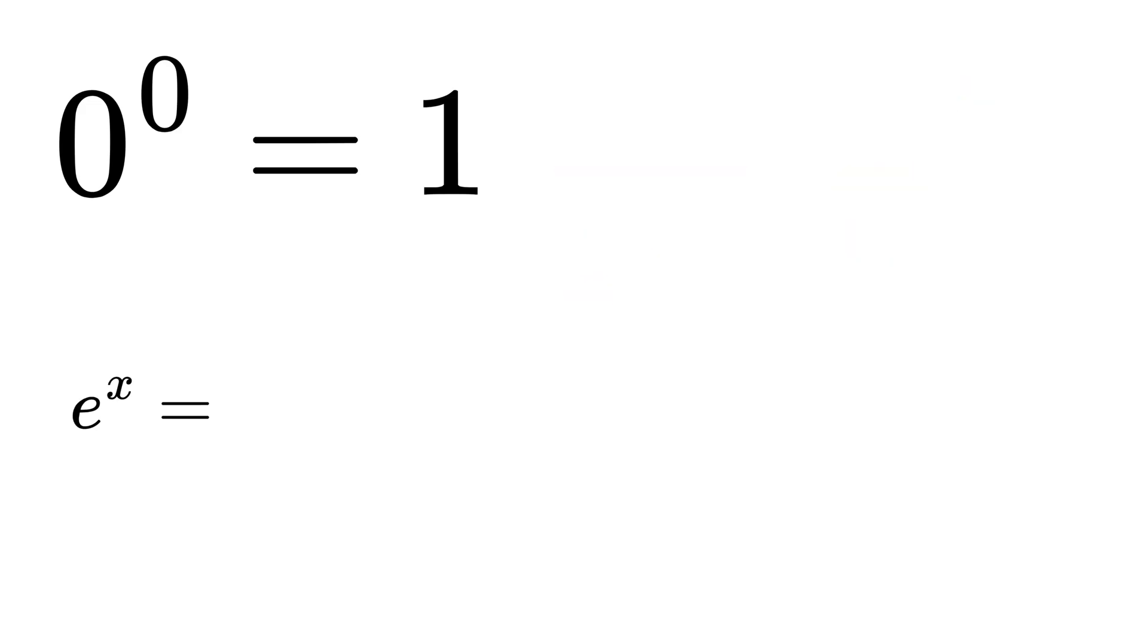For example, the function e raised to x is defined using an infinite series that starts from n equals zero and goes till infinity of x raised to n divided by n factorial. So in short, e raised to x is x raised to zero divided by zero factorial plus x raised to one divided by one factorial plus x raised to two divided by two factorial and so on.